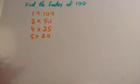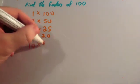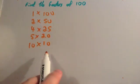6 can't be multiplied by a whole number to give you 100. 7, no. 8, no. 9, no. 10 times 10 is 100, and because this is 10 times 10 I know that 11 won't work and so on. So we know that we're finished.